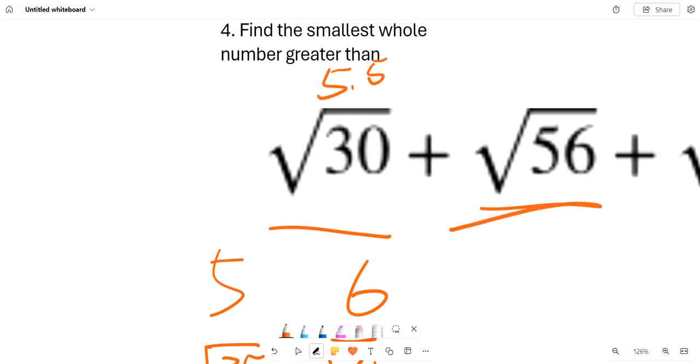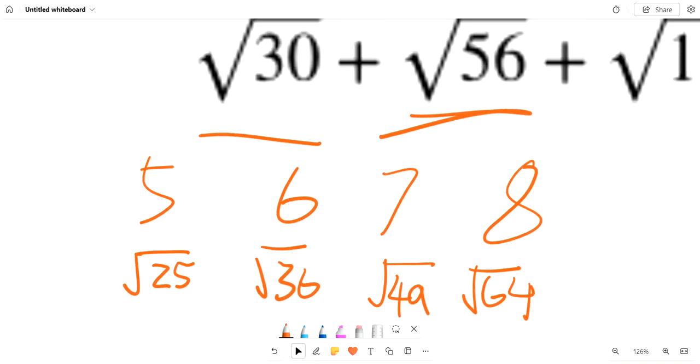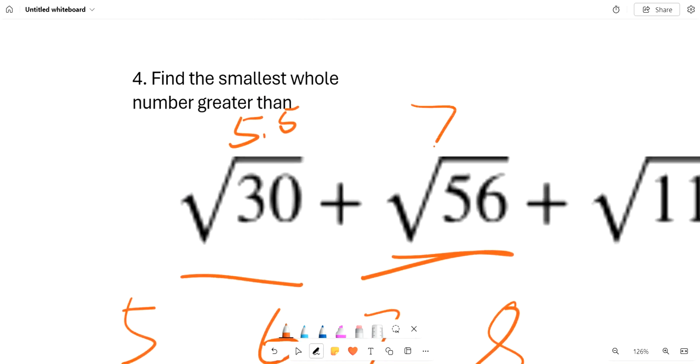Meanwhile, we know that this is in the smack middle of 7 and 8, which are square root 49 and square root 64 respectively. So we can estimate 7.5.